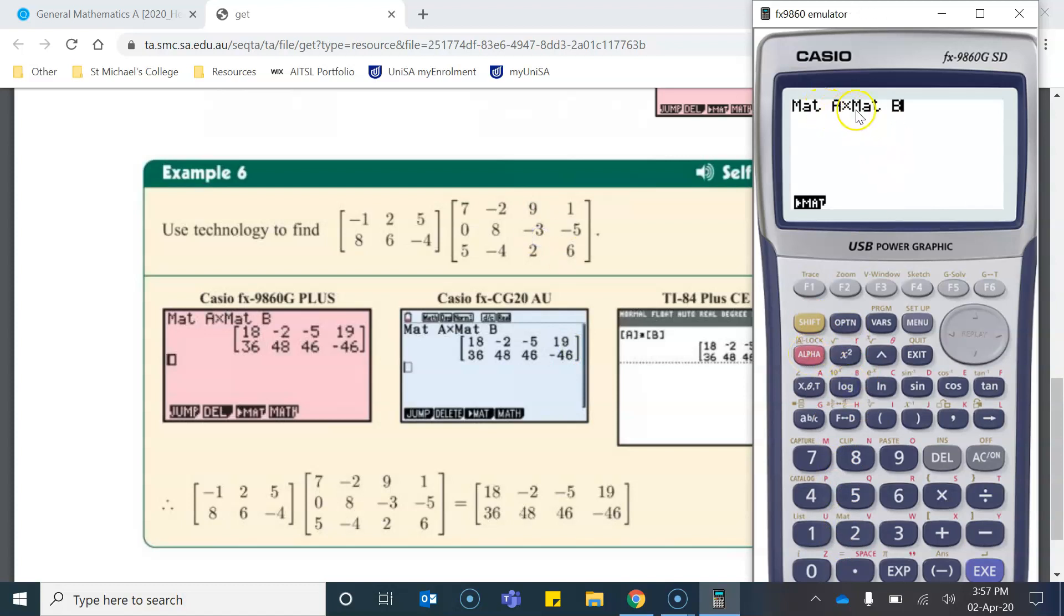Now I've got matrix A times matrix B, and if I click execute, you'll notice that the numbers which pop out are the same as what they are showing the product to be. This is a good way to check your answers. Now, we've already learned how to do those multiplications manually in any type of assessment piece that we have. You'll have to be able to show that you can do it manually as well as using technology.